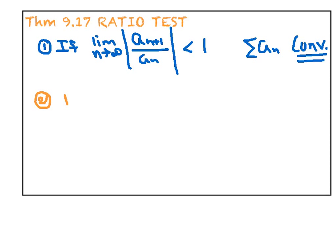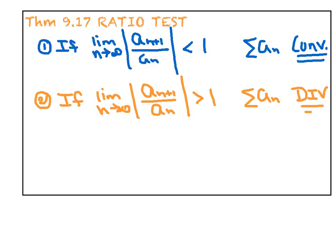The second possible outcome says, if the limit turns out to be greater than one—in other words, that kind of implies that the terms aren't decreasing, they're actually increasing—then we could say for sure that the series definitely diverges in that case.